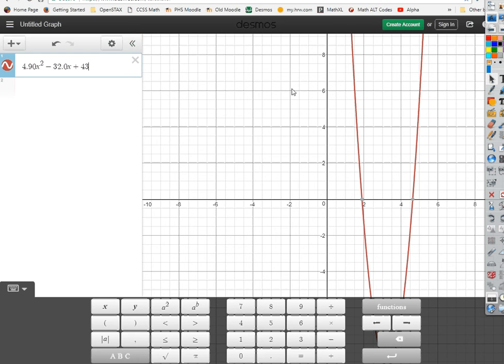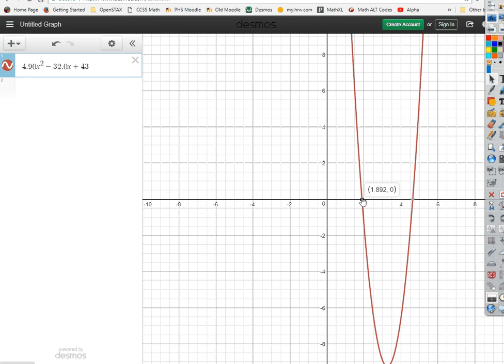Okay, everybody agree? So we want to know when that function equals zero. Well, there are the zeros. One of them is at 1.892. Remember, that's t, right? And the other one is at 4.639.